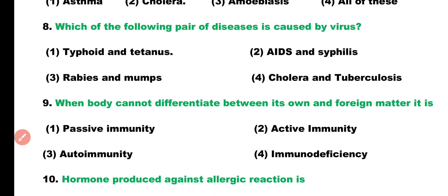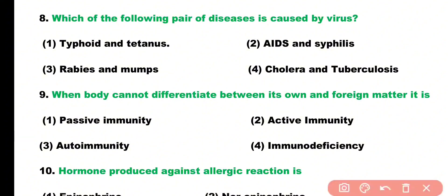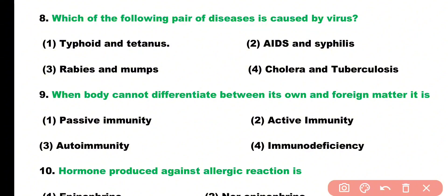Question number eight: which of the following pair of diseases is caused by viruses? Options: typhoid and tetanus, AIDS and syphilis, rabies and mumps, cholera and tuberculosis. Correct answer is option three — rabies as well as mumps are viral diseases. Rabies is caused by rabies virus, while mumps is caused by paramyxovirus.